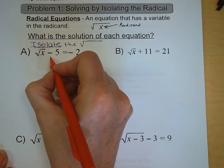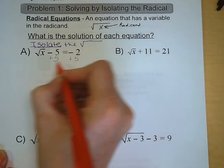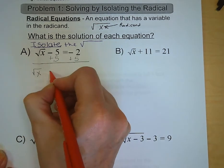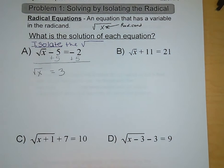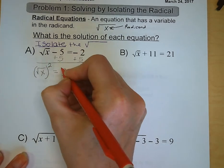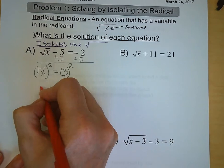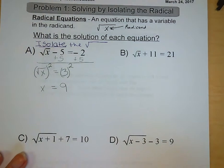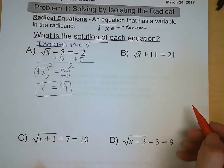We could even think of that like we have in the past of getting a variable. So we're going to add 5 to both sides. So we have the square root of x is equal to 3. And in order to solve that, we need to square both sides of our equation because squaring something is the opposite of taking the square root. So we find that x is equal to 9, and that's your final answer.